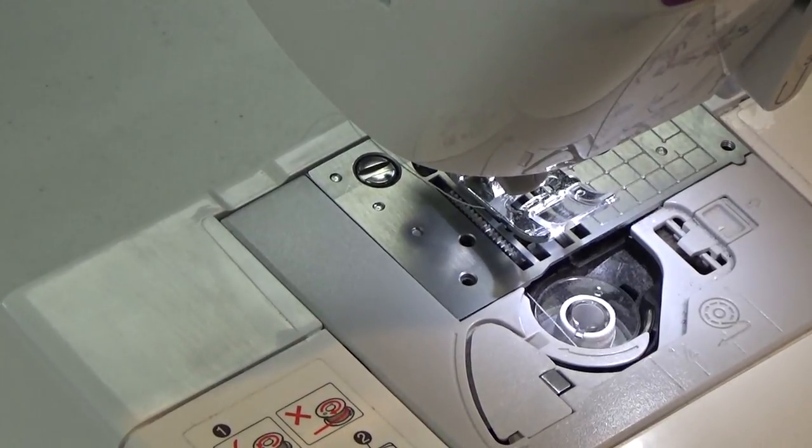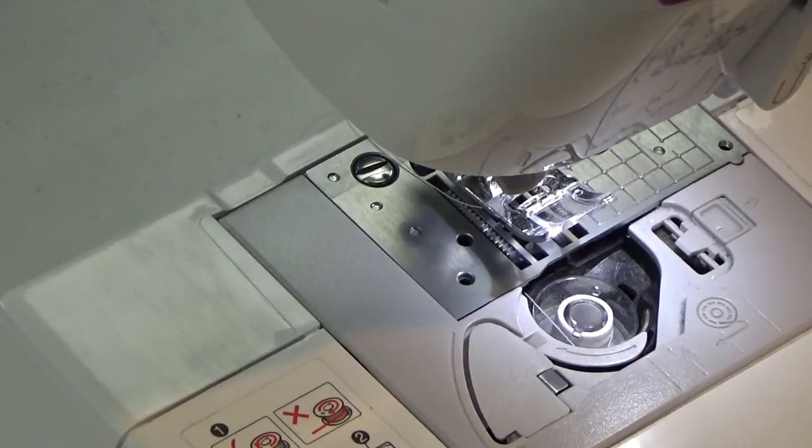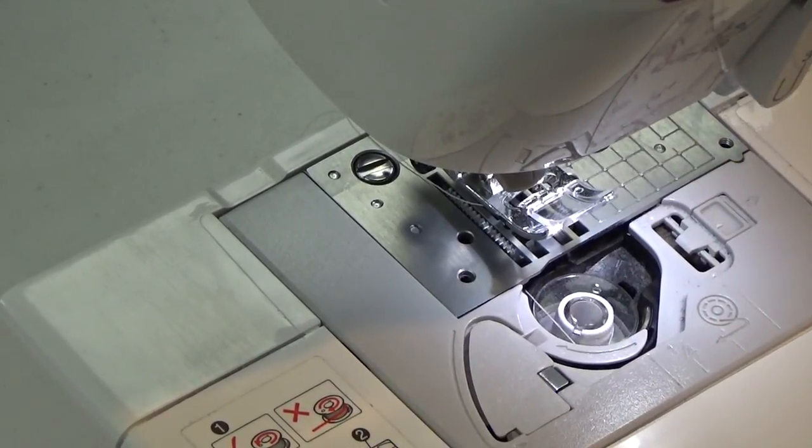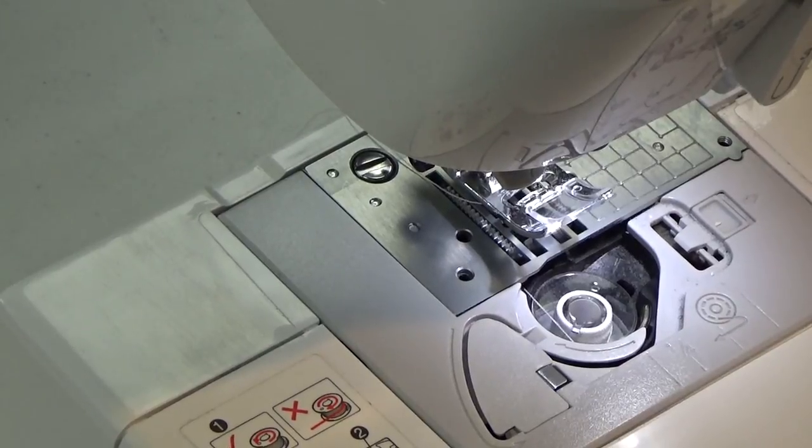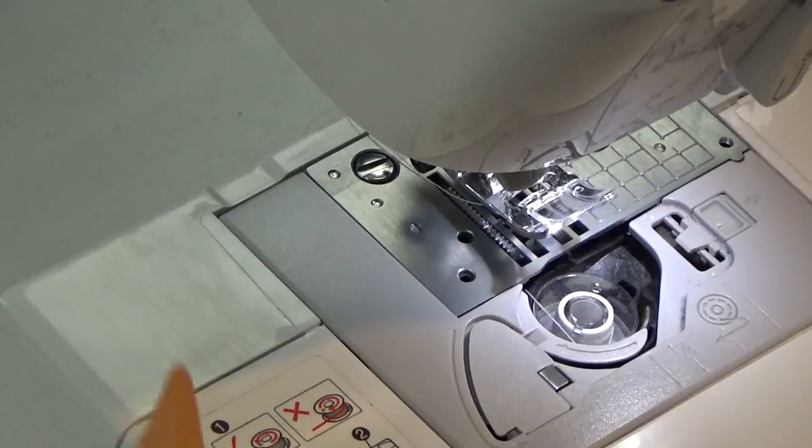First thing you're going to want to do - now this is a Brother SE-400, but this same method applies for all of my Brother machines. I am going to change out the needle and I'm going to change out the bobbin casing.